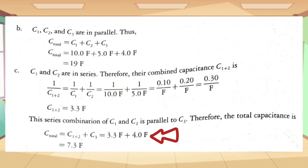Since C1 and C2 is now combined, and we see in the diagram that it is parallel to C3, therefore, to get the total capacitance, we just add the values of C1 plus 2 and C3. So, we now add 3.3 farads plus 4.0 farads, thus giving us the total capacitance of 7.3 farads.